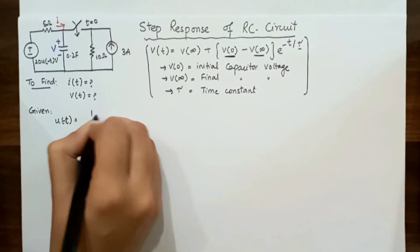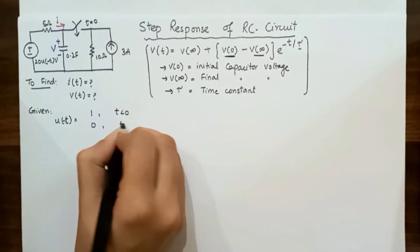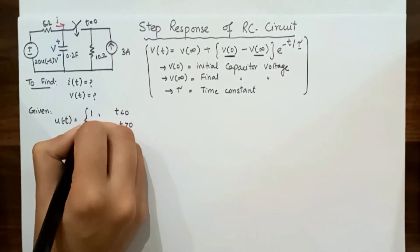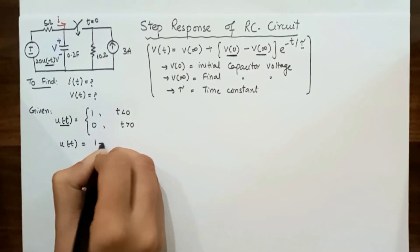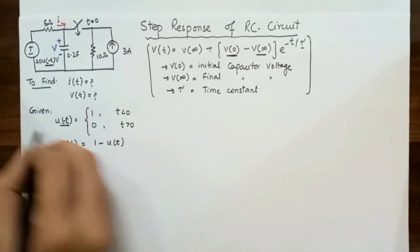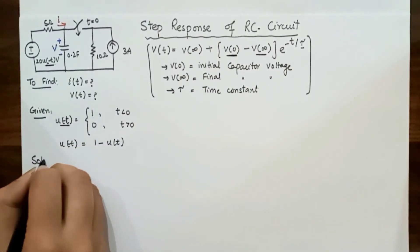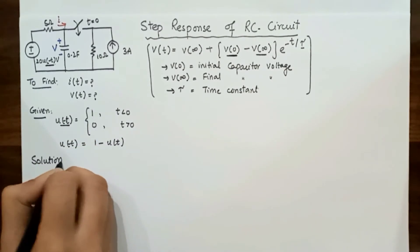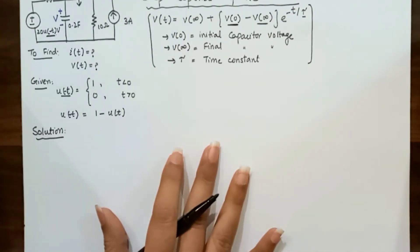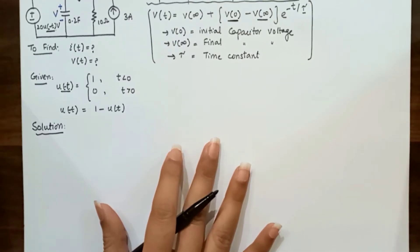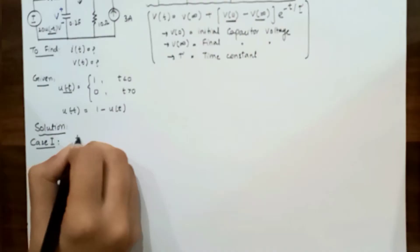u(-t) equals one when time is less than zero, and zero when time is greater than zero. It is basically the opposite of u(t). We know u(t) is zero when time is less than zero, but u(-t) is one when time is less than zero. Similarly, u(t) equals one when time is greater than zero, but u(-t) is zero when time is greater than zero.